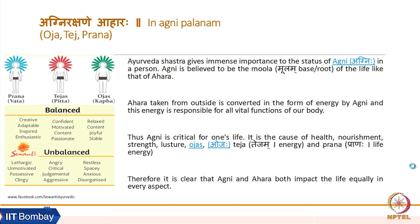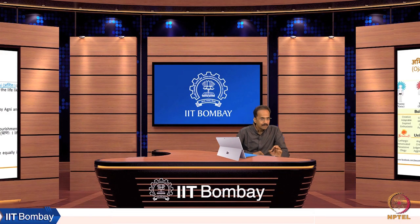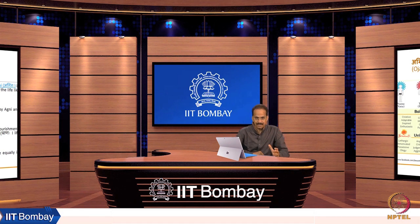Agni is reflected in three forms: prana, which is the subtle aspect of vata; tejas, which is the subtle aspect of pitta; and ojas, which is the subtle aspect of kapha. These are the three types of life energy. When prana is well balanced, we have creativity, adaptability, and we are inspired and enthusiastic. When tejas is balanced, we are confident, motivated, content and passionate. When ojas is balanced, we are relaxed, content, joyful and stable.